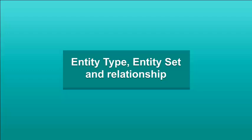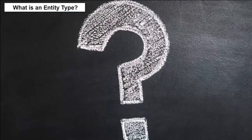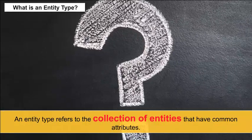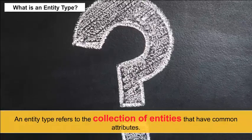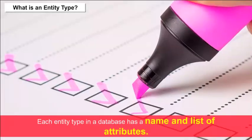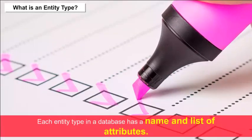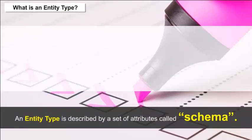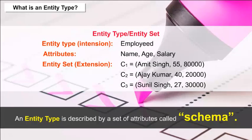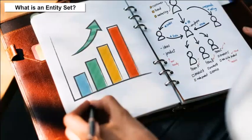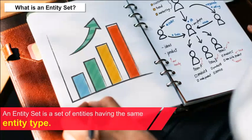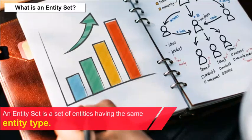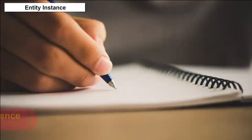Entity Type, Entity Set, and Relationships. What is an entity type? An entity type refers to the collection of entities that have common attributes. Each entity type in a database has a name and list of attributes. An entity type is described by a set of attributes called a schema.